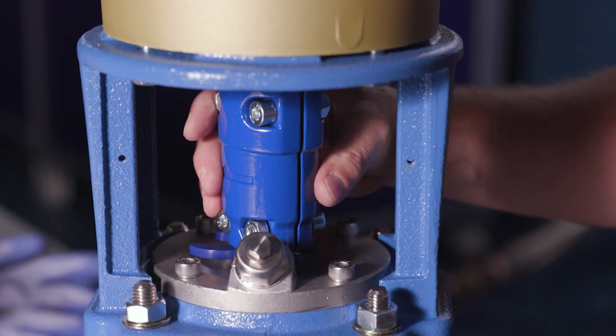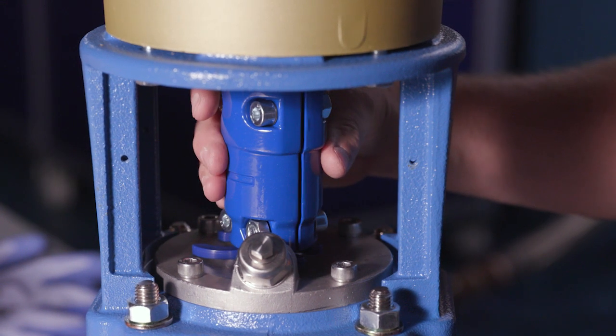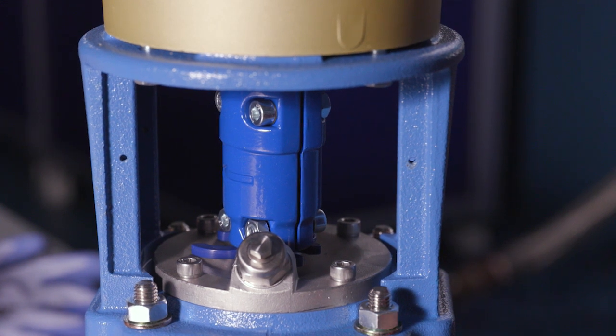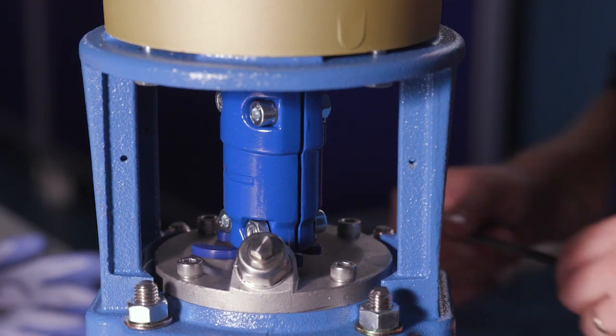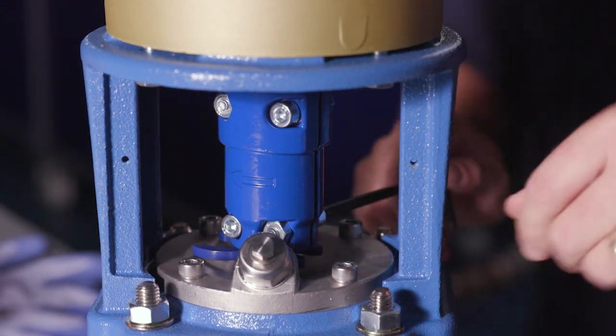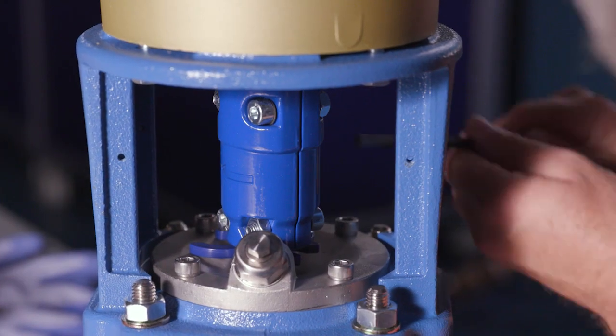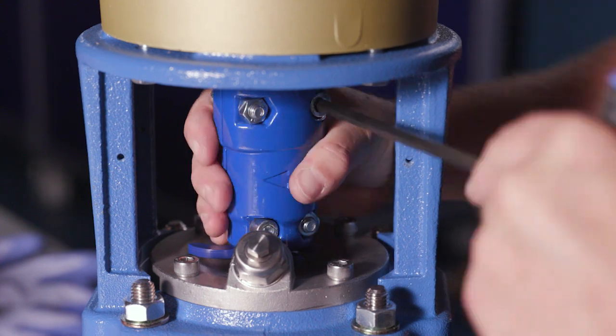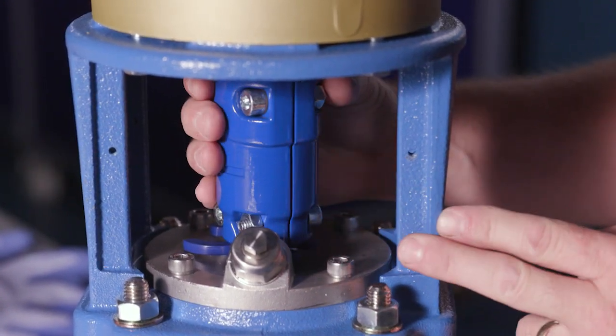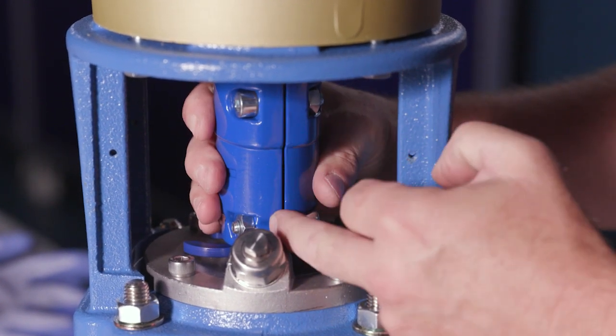You want to make sure that in the end this gap here on both sides is even. We're going to tighten these four bolts and we're going to make sure that we've got a nice even top to bottom and side to side gap.